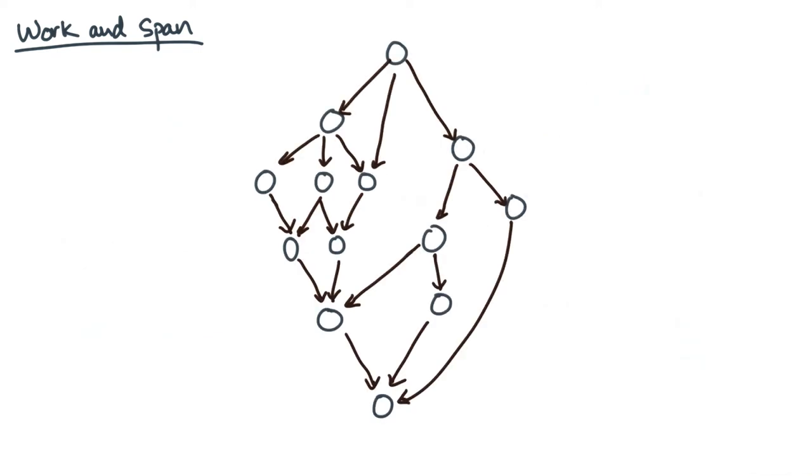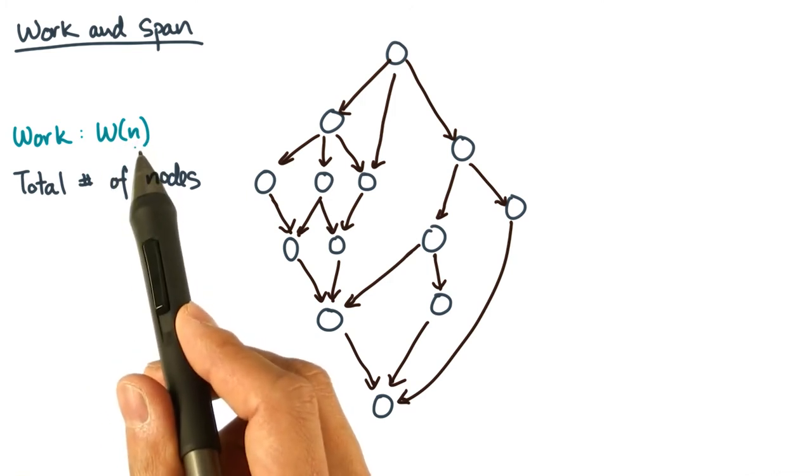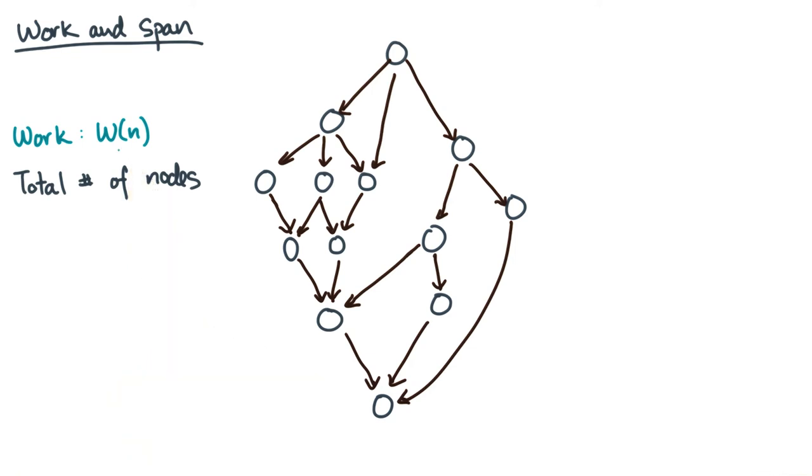Given a DAG like this one, I will always ask you two questions about it. The first question is, how many vertices does it have in total? And I'm going to give this a name, I'm going to call it work. And I'll usually write it as W of n, since the total number of operations should somehow depend on the size of the input n. Now computing the work is easy, you just count the number of vertices.